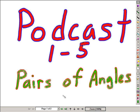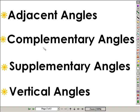Welcome to Podcast 1-5, Pairs of Angles. In this lesson, we will be looking at the following pairs of angles: adjacent, complementary, supplementary, and vertical.